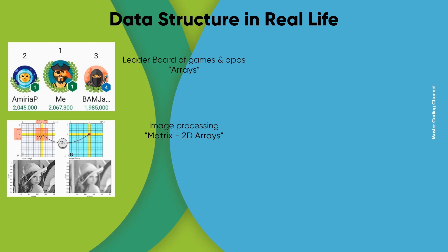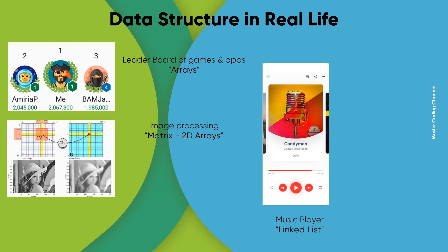Also in image processing, we use a data structure called matrix or 2D array. In the music player when you want to swipe left or right for the next or previous music that you are currently playing, the music player uses the linked list.